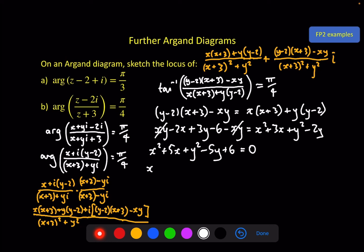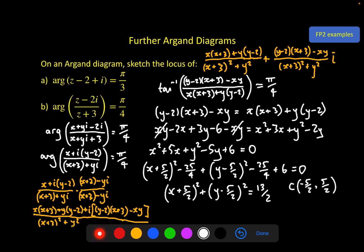Then complete the square as usual to get our final answer. Throw those numbers on the other side. And we have our circle equation. So the center point is at minus 5 over 2, 5 over 2. And the radius is equal to the square root of 13 over 2.